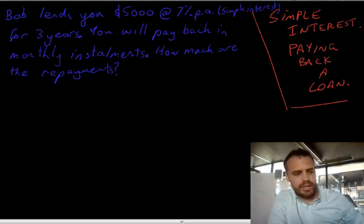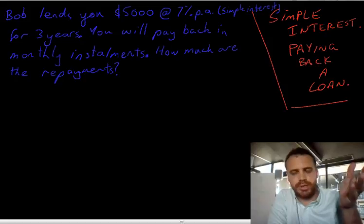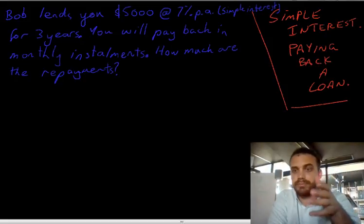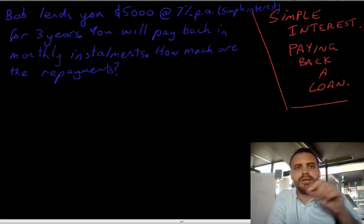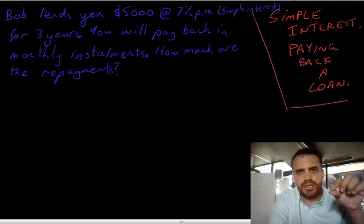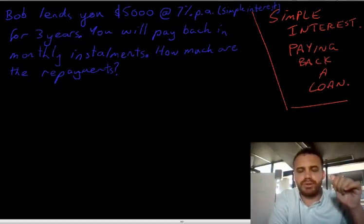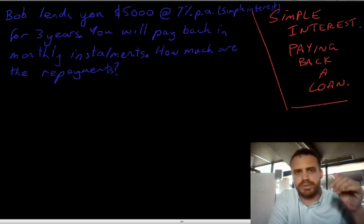Imagine you're in this position. Bob lends you $5,000 at 7% per annum simple interest for three years. You'll pay back in monthly installments — how much are the repayments?